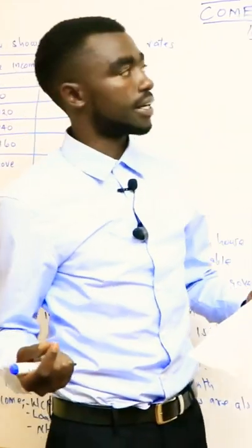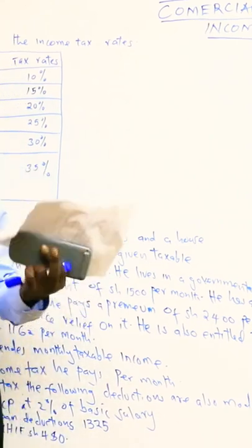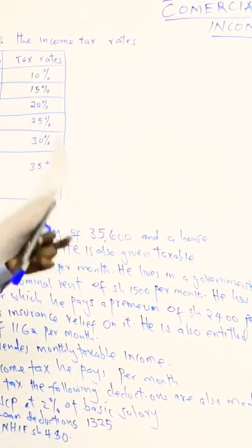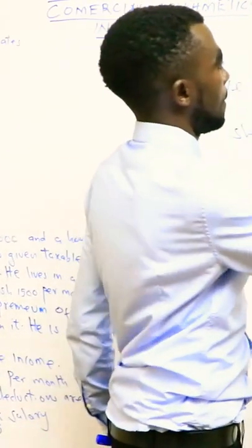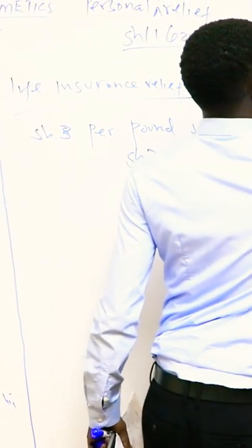...is housed by the government, then he has to pay what we call the nominal rent. When we calculate the taxable income, we say taxable income...